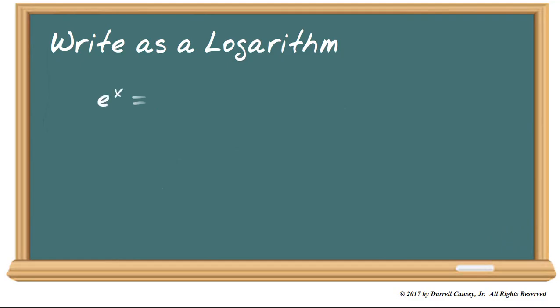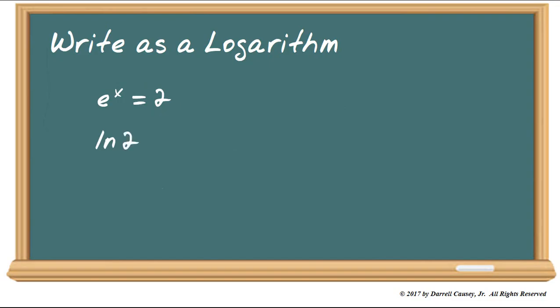Write as a logarithm: E to the x equals 2. Well, E is our base, so it's going to be a natural logarithm — log base E. And 2 is our number, so we write 2 there. And that of course equals our exponent, which is x. Pretty cool!